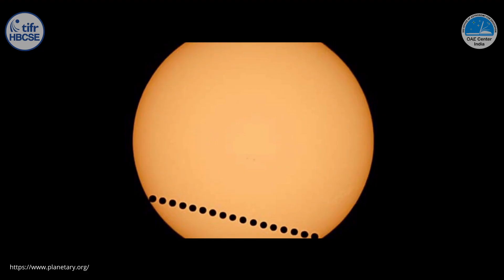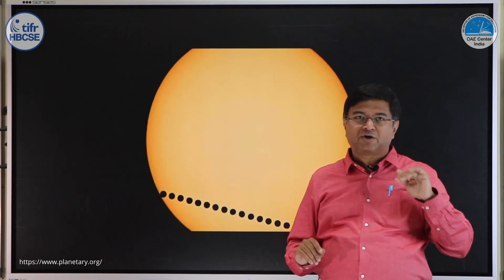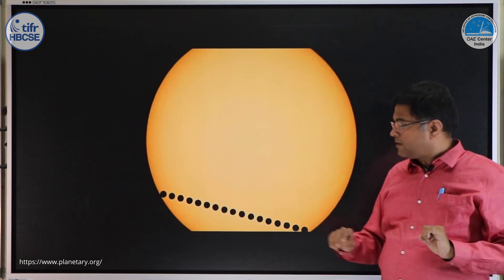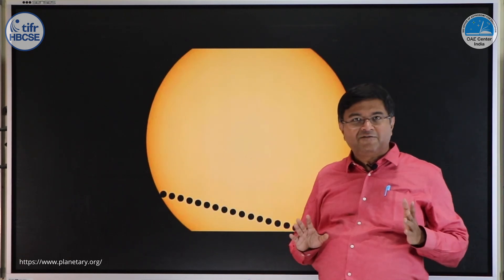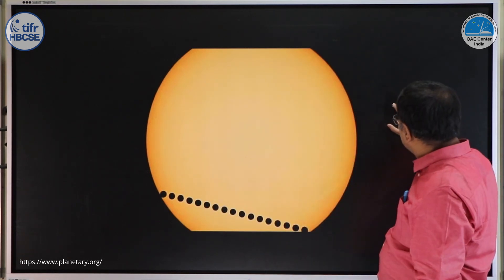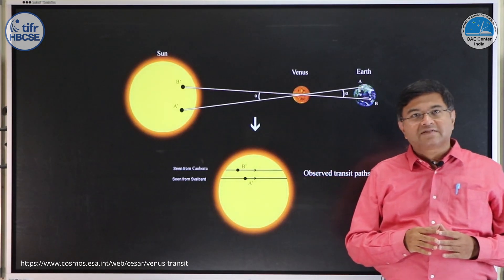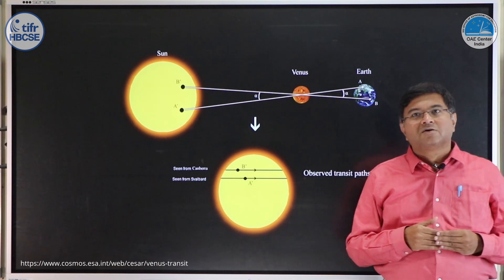Another special thing is, as Venus is much closer to us, from different places on Earth the path of Venus on solar disk appears to be significantly different. There is also difference in the path of Mercury as we see from different places, but that difference is much smaller. In case of Venus, the difference is much more significant. In fact, that was used to calculate the exact distance of Venus from Earth.